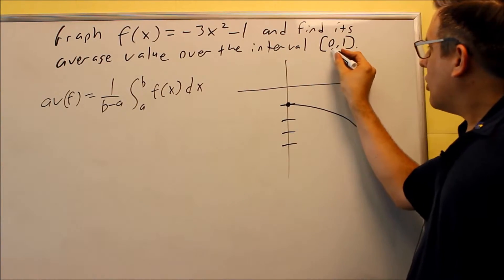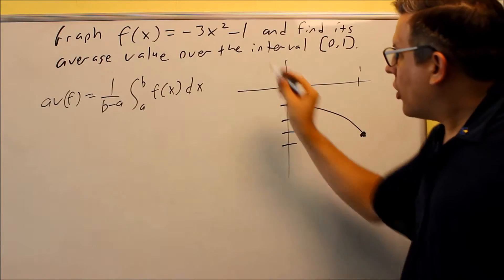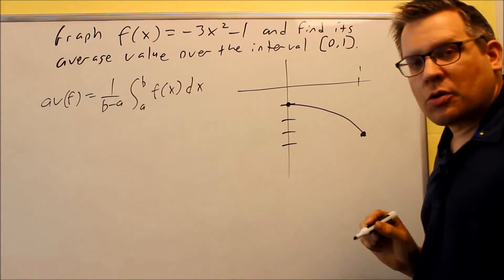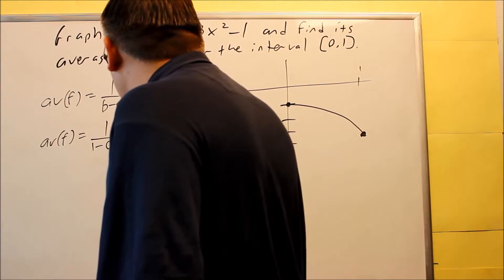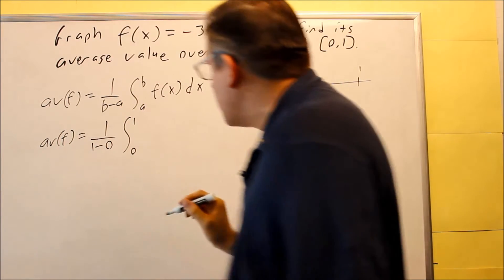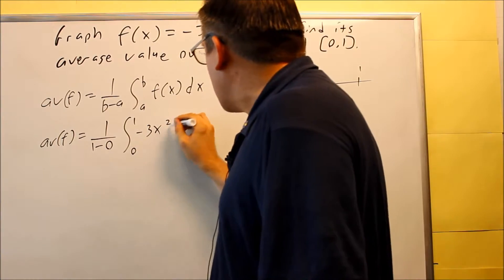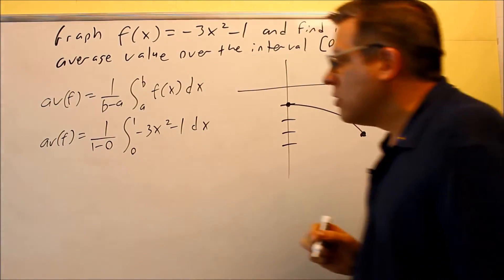The a in this case is 0 and your b is 1. Your function is this one here, so let's put that all in. Average value function is going to be 1 over 1 minus 0, and then we're going to go from 0 to 1, negative 3x squared minus 1 dx.